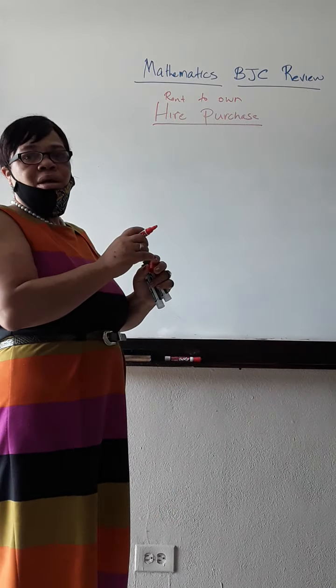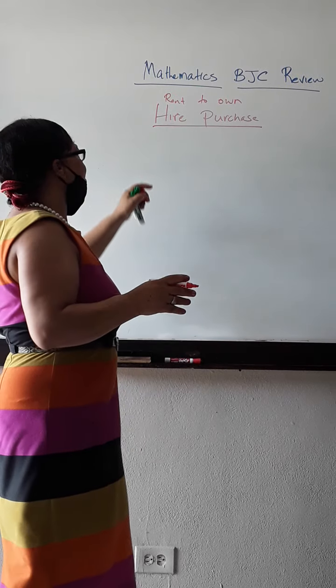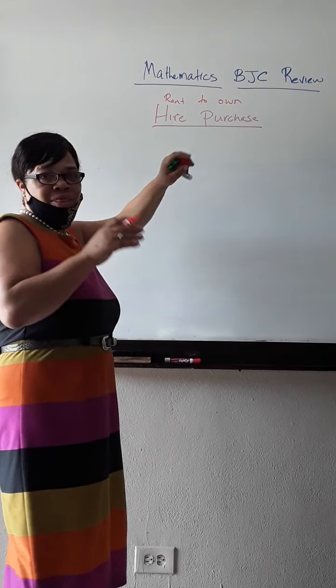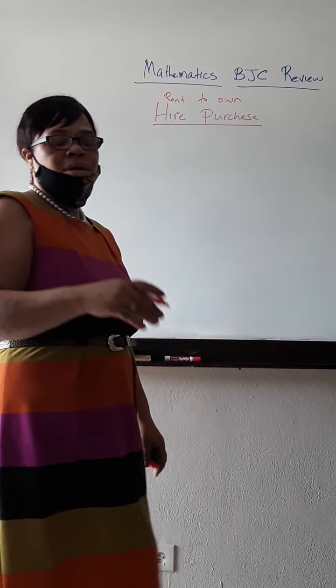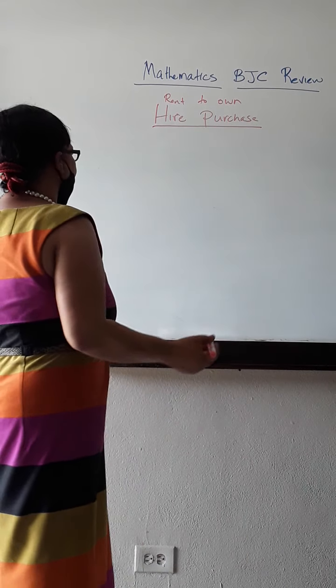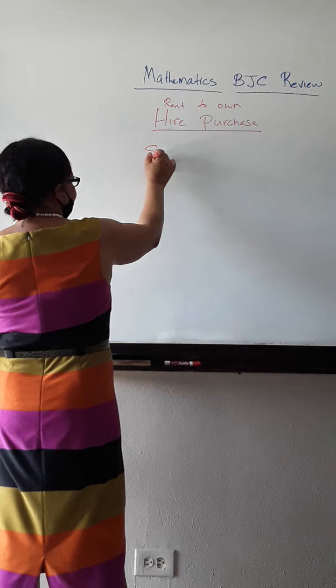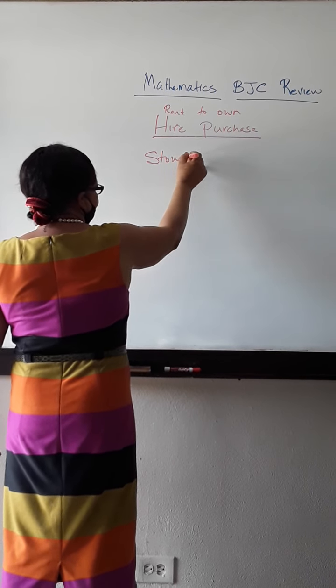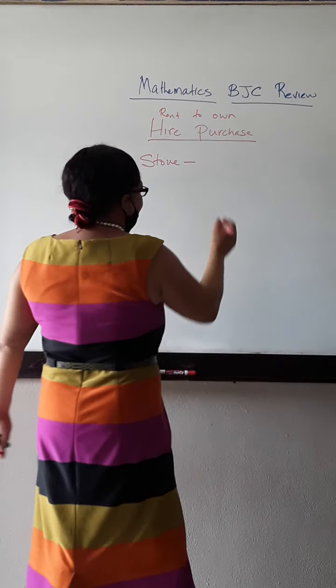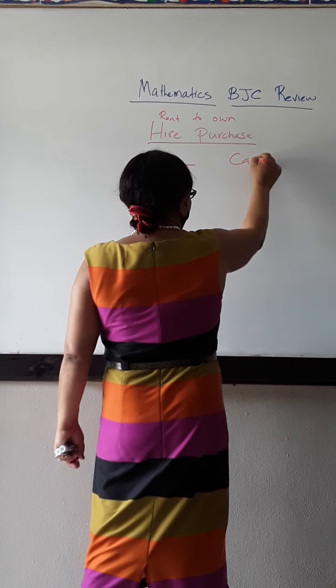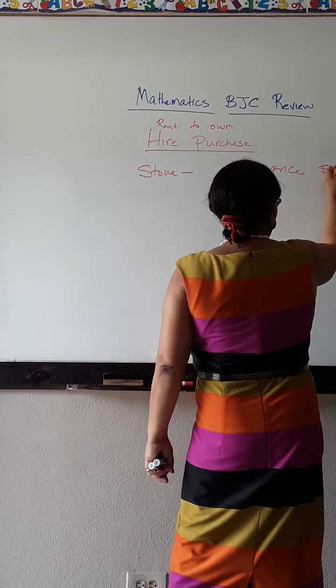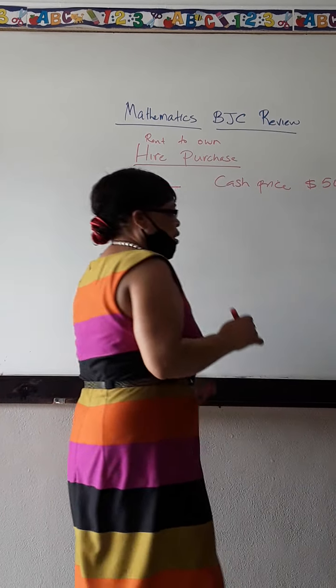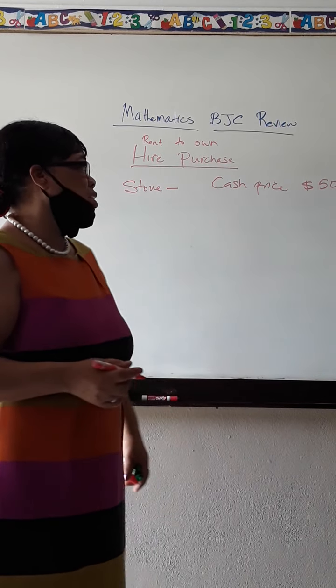I am purchasing it, but I am going to have to pay down something and then I am going to pay monthly until I complete. So let's say I need a stove and the cash price for my stove is $500. That is one option. Cash price is $500.